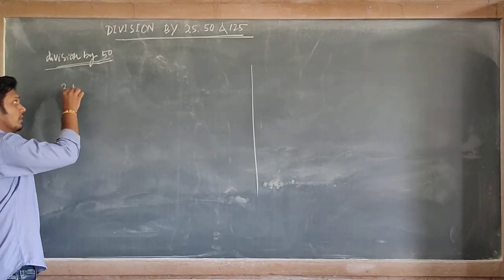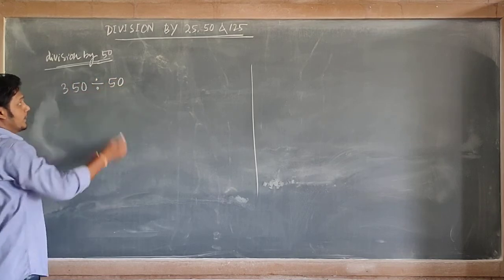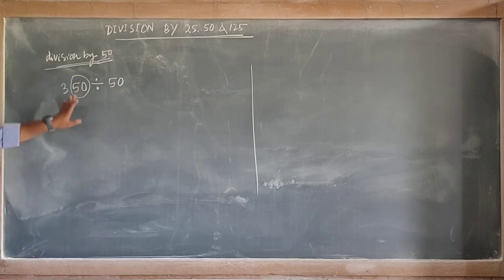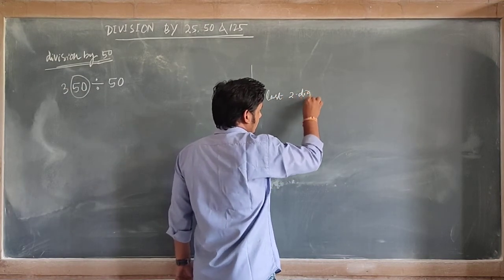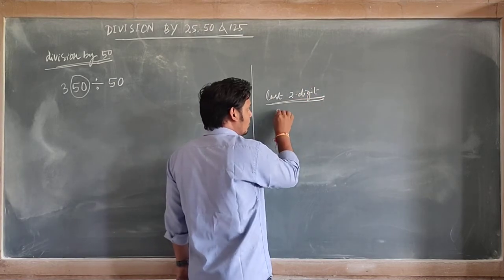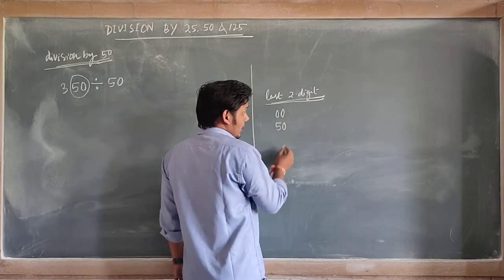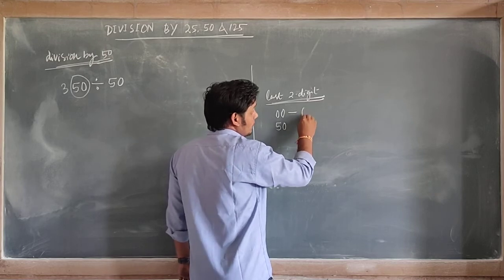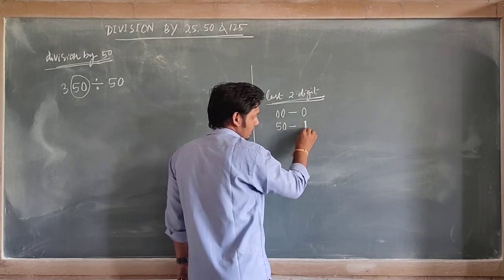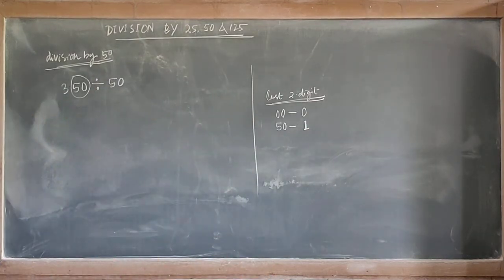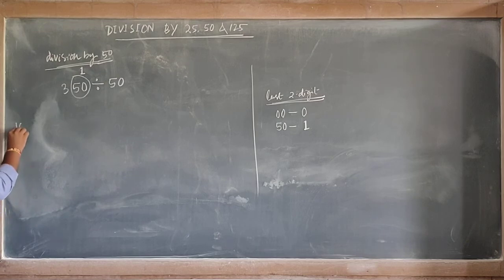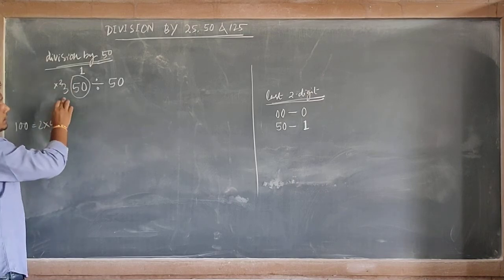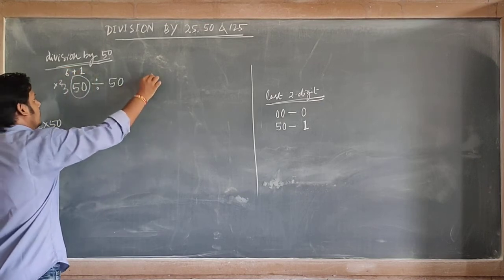Suppose 350 divided by 50. Same thing — separate the last two digits. If the last two digits are 00, we take 0. If the last two digits are 50, we take 1. For division by 50, we multiply the remaining digits by 2, because 100 can be taken 2 times by 50. Here we have 50, so we keep 1, and 3 multiplied by 2 is 6. Then 6 plus 1 — the answer is 7.